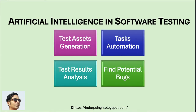Now let's discuss the intersection of AI and software testing. Software testing is a critical process in software development to evaluate if applications work as expected and are free of bugs. What is the role of artificial intelligence in software testing? AI in software testing refers to the use of AI techniques to enhance the testing process.